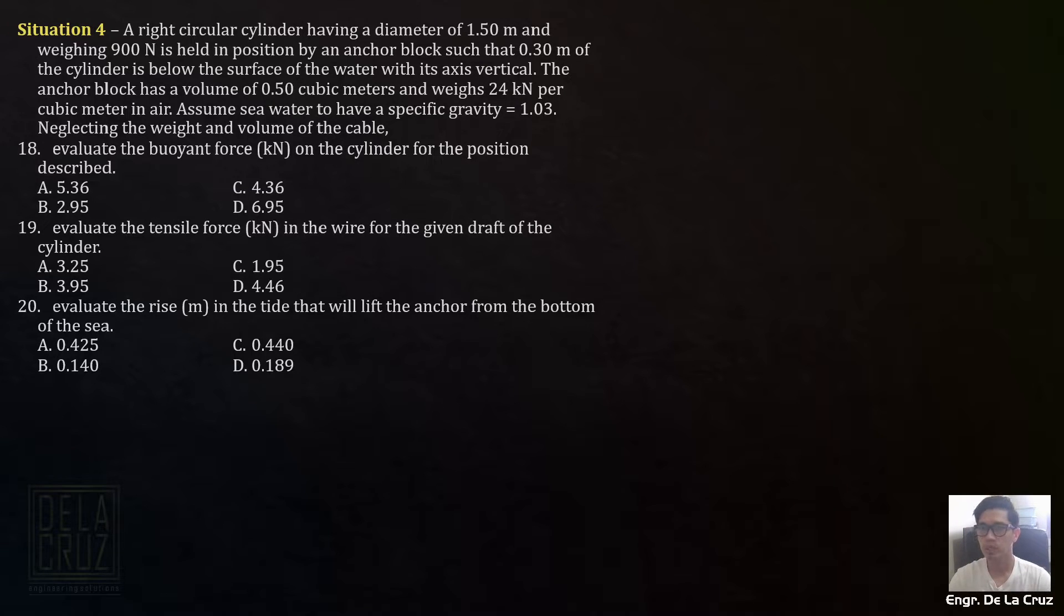Alright, let's have situation 4. A right circular cylinder having a diameter of 1.5 meters and weighing 900 newtons is held up in position by an anchor block such that 0.3 meters of the cylinder is below the surface of water with its axis vertical. The anchor block has a volume of 0.5 cubic meters and weighs 24 kilonewtons per cubic meter in air. Assume seawater to have a specific gravity of 1.03. Neglecting the weight and volume of the cable.